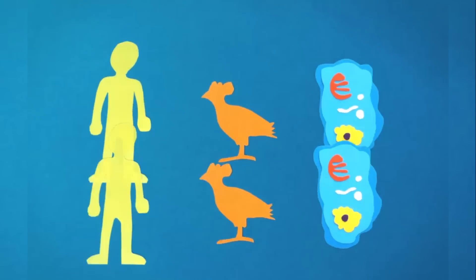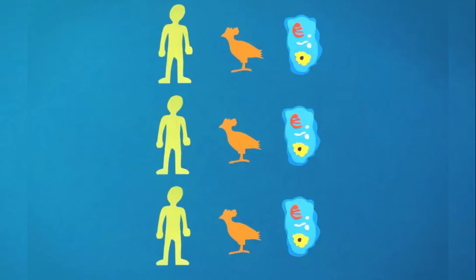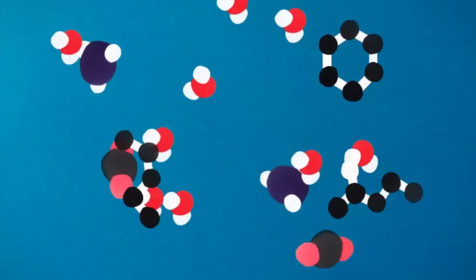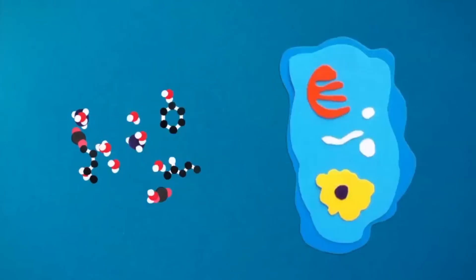Every living thing came from another living thing. But about four billion years ago, there was no life on Earth. Just chemistry. So how do a bunch of dead chemicals come together to make something that's alive?